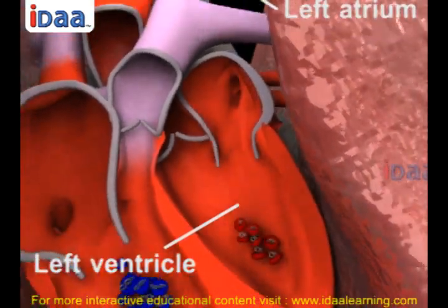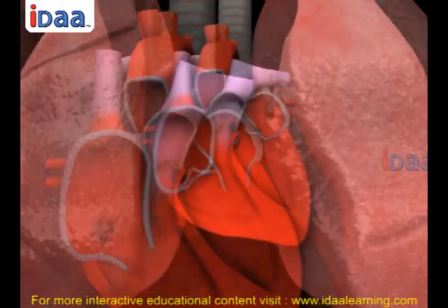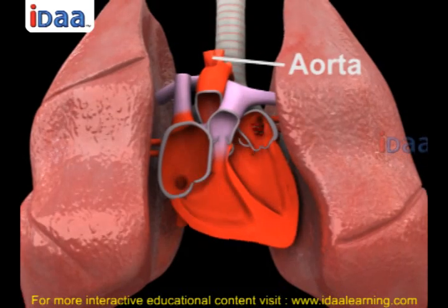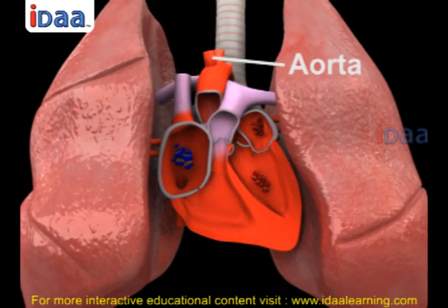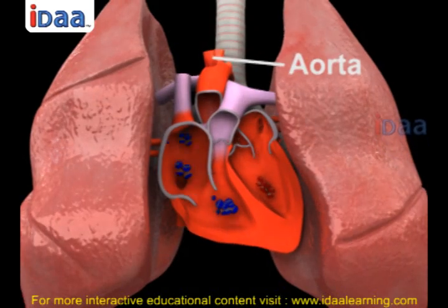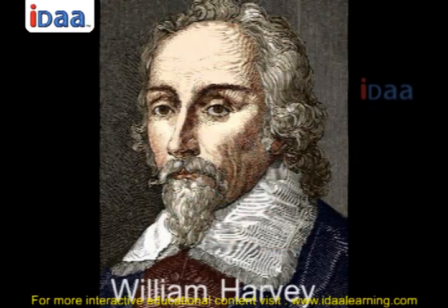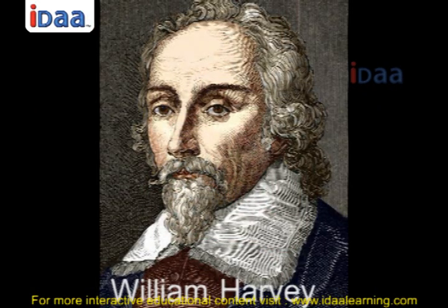From here, the aorta and the other arteries carry oxygen rich blood to the body parts and the cycle begins all over again. An English physician, William Harvey, discovered the circulation of blood.